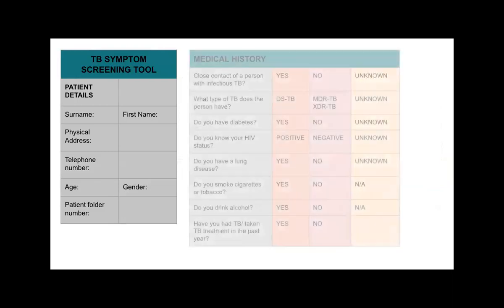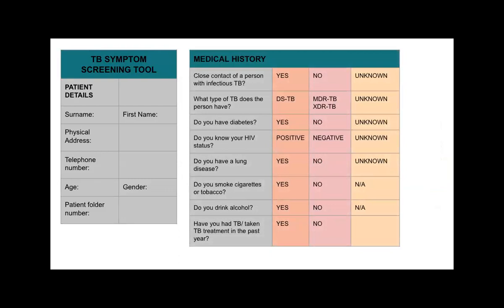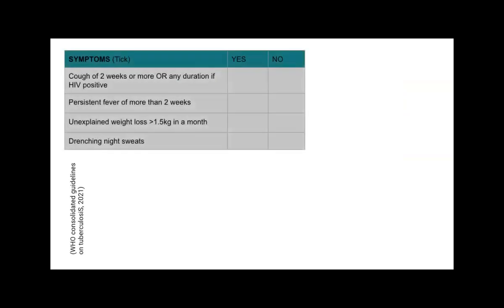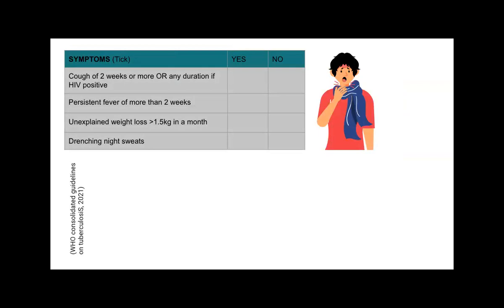The TB symptoms screening tool starts with patient details including address and telephone number. Then we look at medical history — going through the risk factors: close contact of a person with TB and what type, diabetes, HIV status (a good opportunity to test if unknown), lung disease, smoking, alcohol use, and previous TB or TB treatment in the past year. For the symptom screen, we look at the four cardinal features. For adults: a cough of two weeks or more (or any duration if HIV positive), persistent fever of more than two weeks, unexplained weight loss of more than 1.5 kilograms in a month, and drenching night sweats.